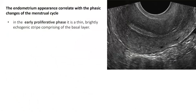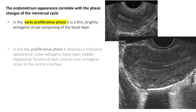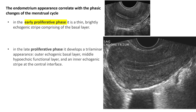The endometrial appearance correlates with the phasic changes of the menstrual cycle. In the early proliferative phase, it is a thin, brightly echogenic stripe comprising the basal layer. In the late proliferative phase, it develops a trilaminar appearance: outer echogenic basal layer, middle hypoechoic functional layer, and an inner echogenic stripe at the central interface.